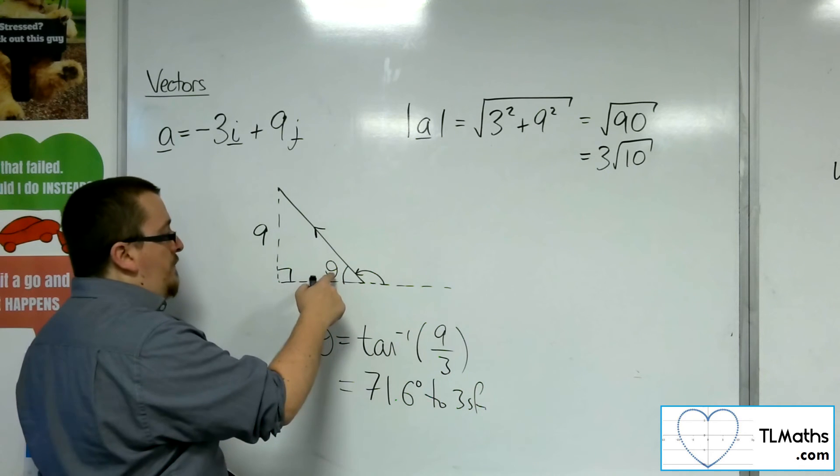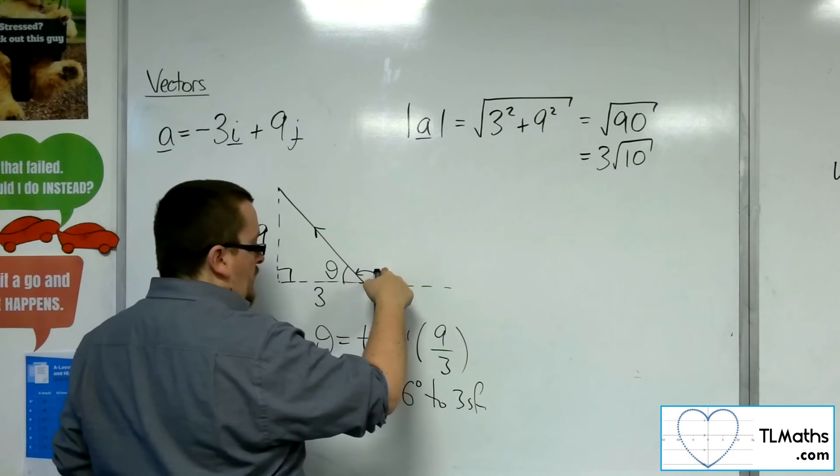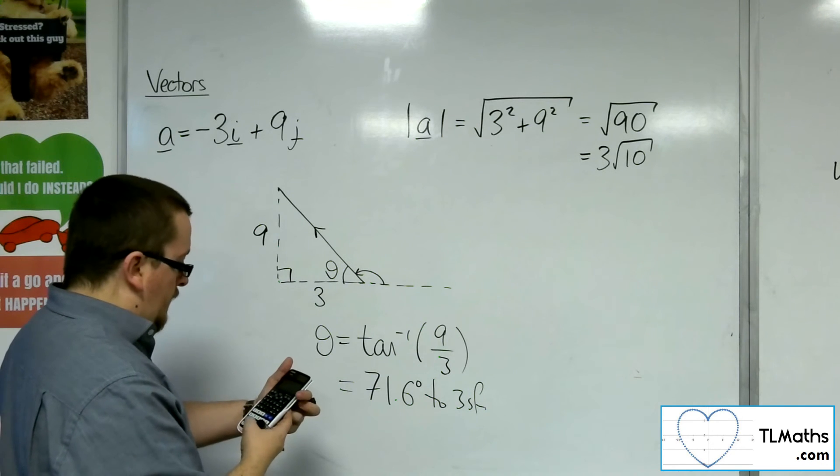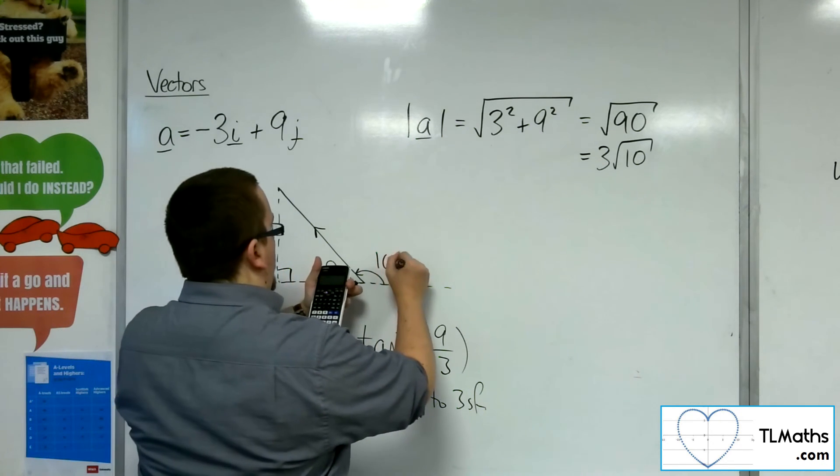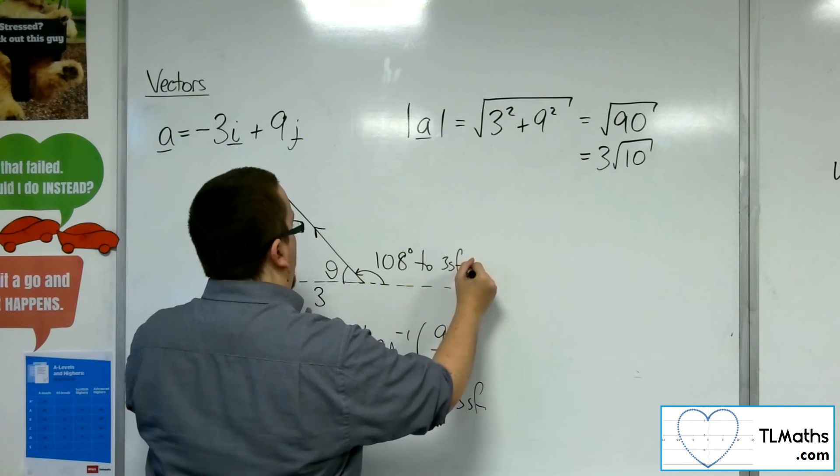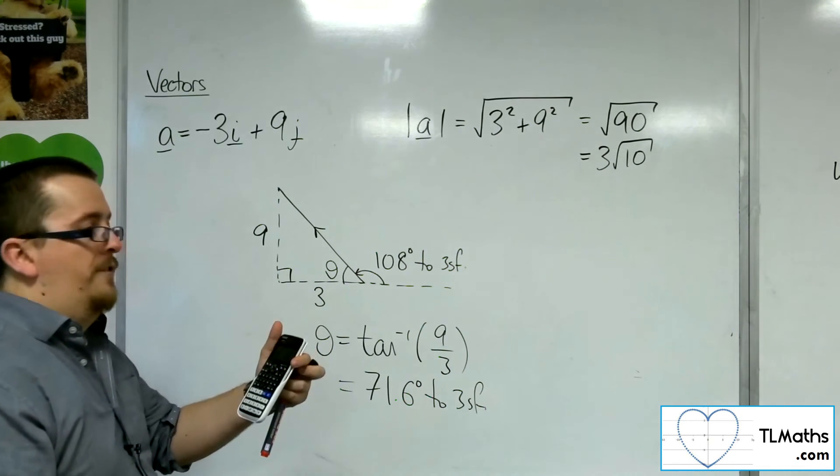So that's that one. So the angle we want is 180, take away that, which would be 108 degrees to 3 sig fig. It's 108.4349488.